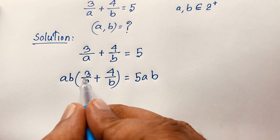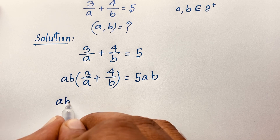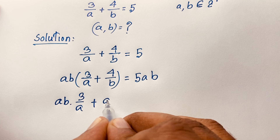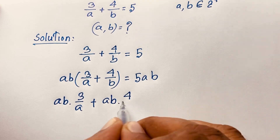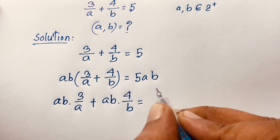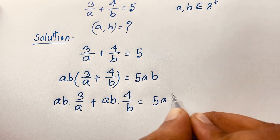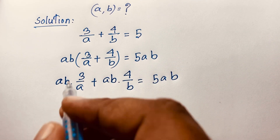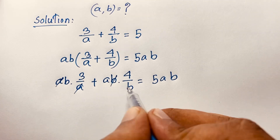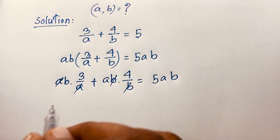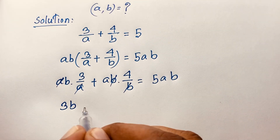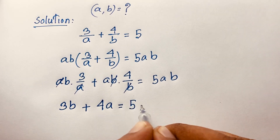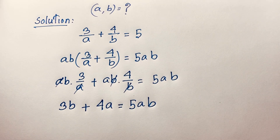Expanding, A·B times 3 over A gives 3B (the A's cancel), and A·B times 4 over B gives 4A (the B's cancel). So we find the equation 3B plus 4A is equal to 5AB.